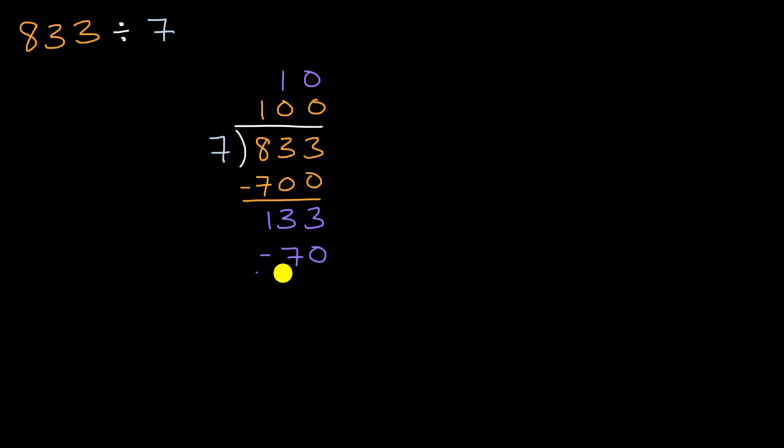And then we can subtract. And we see that we have three minus zero is three. 13 tens minus seven tens is six tens. So we have 63 left. So seven definitely can go into 63. We're going to keep doing this until we have a number less than seven over here. Seven, how many times does seven go into 63? You might know from your multiplication tables that seven times nine is 63. So you could get it exactly.